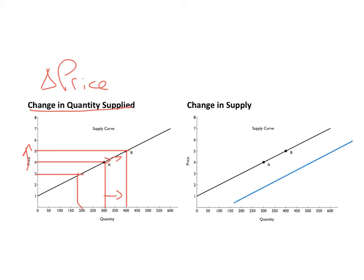We would have a brand new supply curve, represented by a blue line. Notice that at every price, quantity supplied is now higher. For example, at $4, quantity supplied before the shift was 300 units; after the shift — after the increase in supply — quantity supplied is something a little higher than 500 units. This is true at every price. This rightward shift in the supply curve represents an increase in supply.